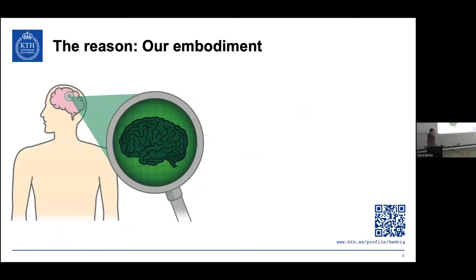The reason why humans work in this way relates to embodiment. Starting already from Kant in the 1700s, the theory about embodiment has developed. It says that human perception and cognition is governed by the fact that we have a body and are situated in the world and have limited capabilities of taking in information. We also have to perform tasks in the world, and what we perceive is purposeful — we perceive things in a purposeful way in order to achieve tasks in the world.